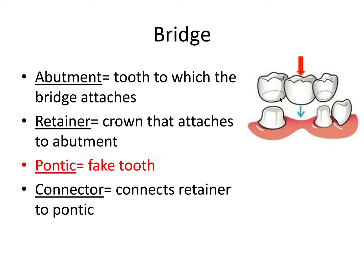Usually you'll have a pontic or multiple pontics between retainers, but there are cases — what's called a cantilever bridge — where you can have just one retainer and one or more pontics attached to it. So you can have different combinations of these elements.